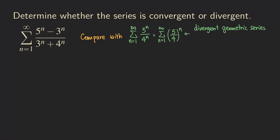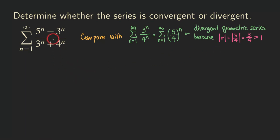Why? Because the absolute value of the common ratio is equal to phi over 4, and that's greater than 1. So that means this series diverges. In this case, we are going to take the limit, and as long as we are getting a positive finite number, we are going to conclude that this series will also diverge, because the one we picked to compare with is a divergent geometric series.